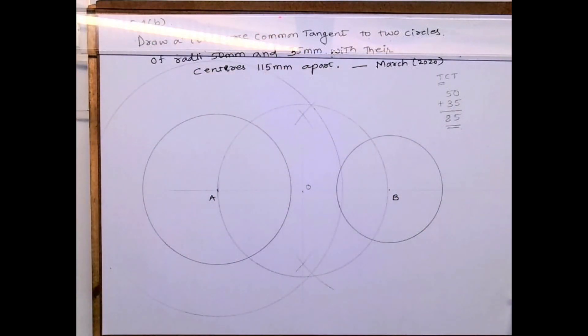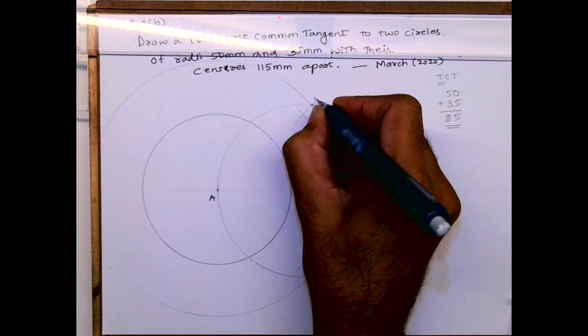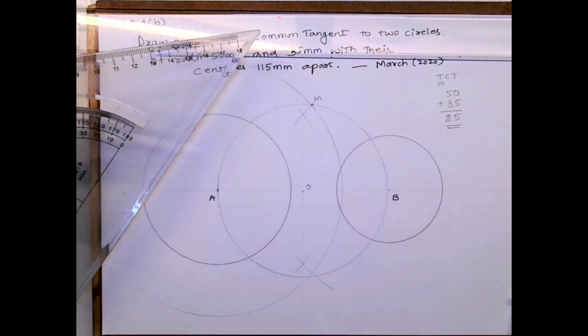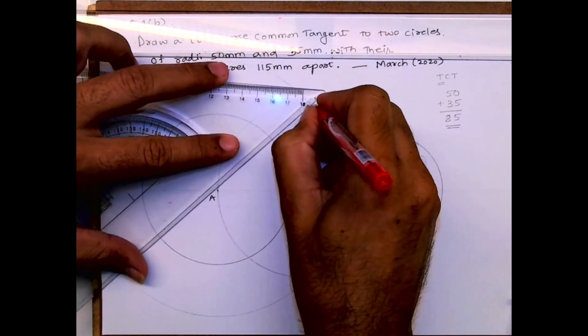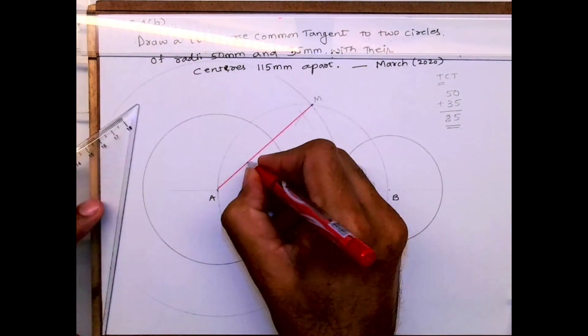Now wherever it will intersect with the mid circle, the circle from O, that is point M. The radius 85 and the middle circle. And then you join A to M. This is important.